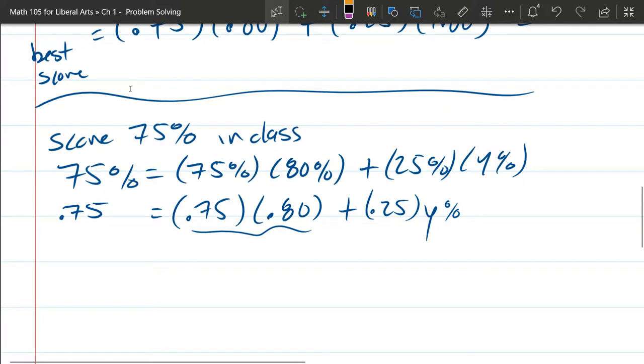Alright, so we got 0.75 times 0.8 is 0.6, plus 0.25Y equals 0.75. So we're going to try to get Y by itself. Y has two friends: it's got a 0.25 friend and a 0.6 friend.